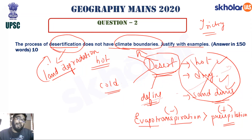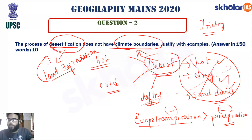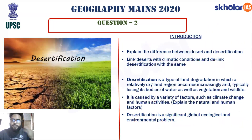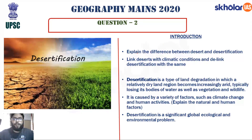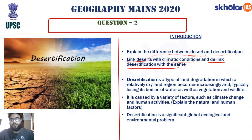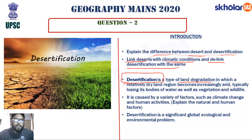To summarize: desert is defined by climatic conditions, whereas desertification is defined by land degradation, which happens through both natural and human-made processes. In your answer, first introduce the difference between desert and desertification, link desert to climatic conditions, then explain desertification as a type of land degradation in relatively dry land regions that become increasingly arid, losing water bodies, vegetation, and wildlife.